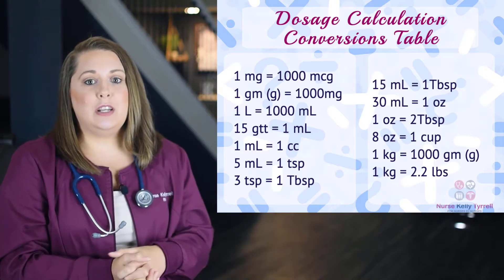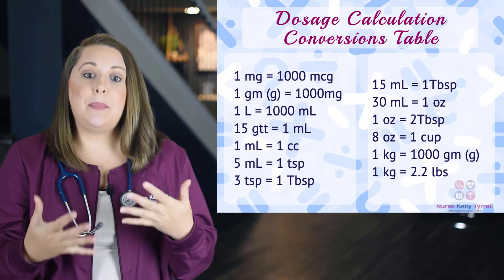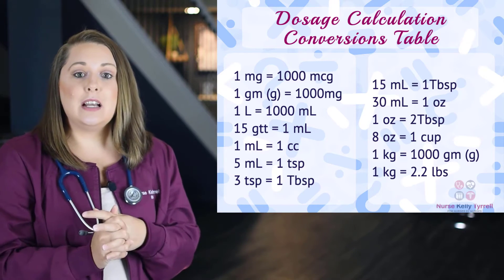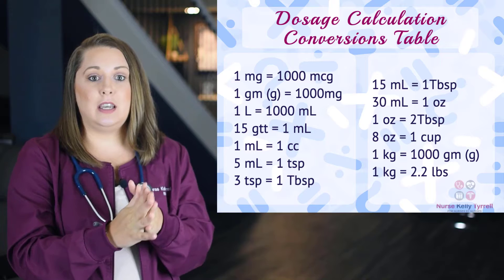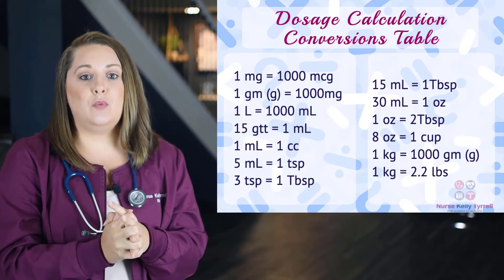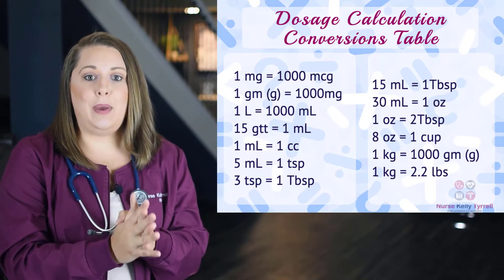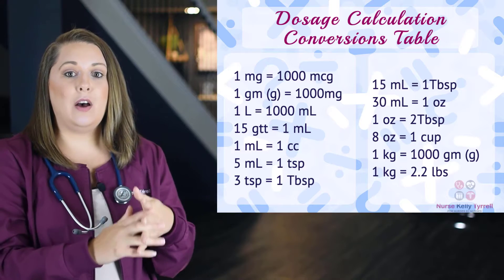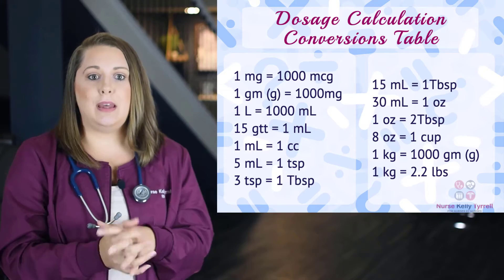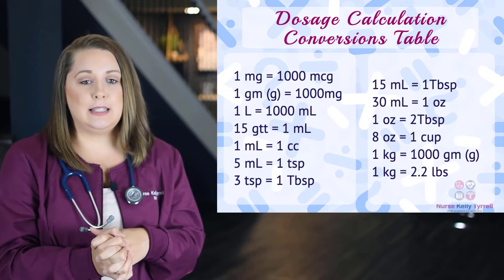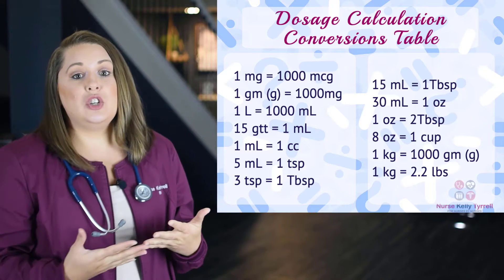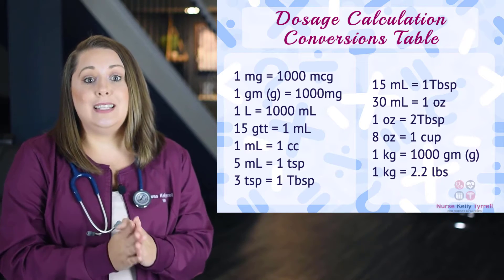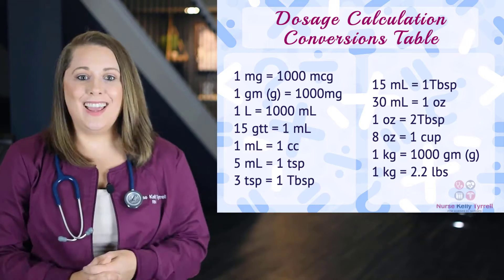Let's try a simple example. Let's say we're preparing to administer a weight-based medication to a pediatric patient and we need to convert his weight from pounds to kilograms. Our patient weighs 27 pounds. So how would we convert from pounds to kilograms using dimensional analysis? First we should have memorized that there are 2.2 pounds in every 1 kilogram.